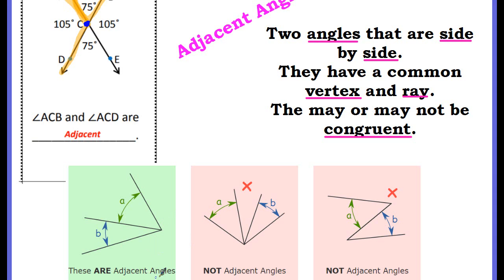The examples down here. These are adjacent angles. They share the common ray right here and the common vertex. Okay these two A and B these are not adjacent. They share a common vertex yes but they don't share a common ray. They don't have any sides.